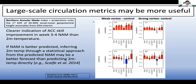Large-scale circulation metrics could be more useful than something like two-meter temperature. Showing the Northern Annular Mode index at both 100 millibars and 1000 millibars, there's a clear increase in skill at 100 millibars following both strong and weak vortex events. At the surface it's noisier, but in general there are clear increases in skill for almost all S2S forecast models. The idea is that if something like the NAM is better predicted, then inferring two-meter temperature through a statistical approach during post-processing may be a better forecast strategy — an idea also presented in Sigauke et al. 2014.